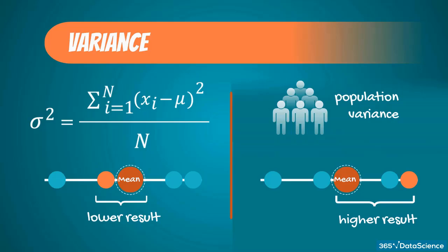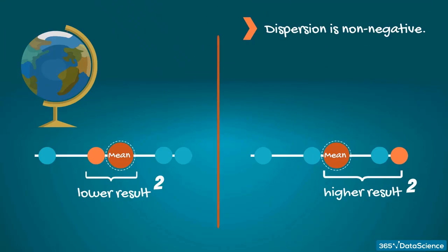Easy. But why do we elevate to the second degree? Squaring the differences has two main purposes. First, by squaring the numbers, we always get non-negative computations. Without going too deep into the mathematics of it, it is intuitive that dispersion cannot be negative.